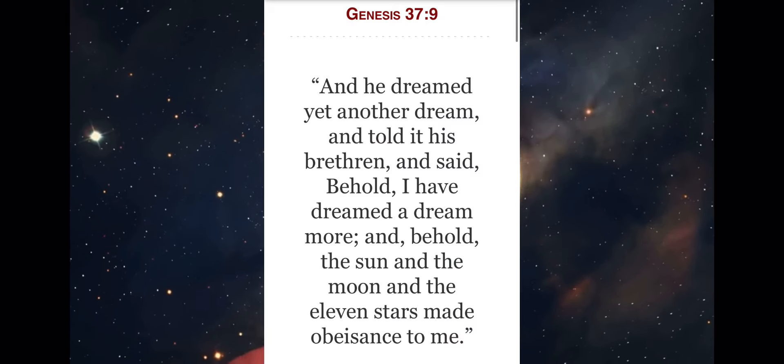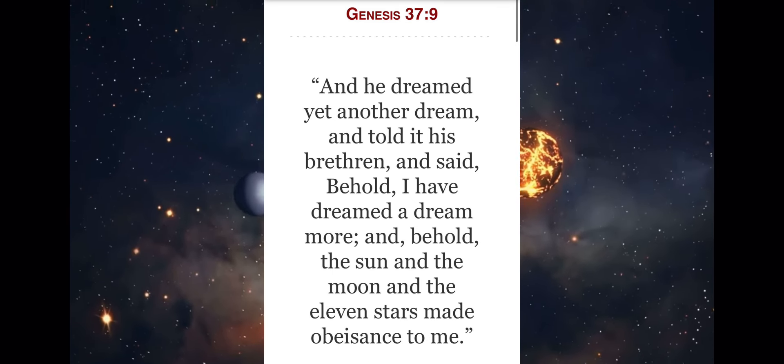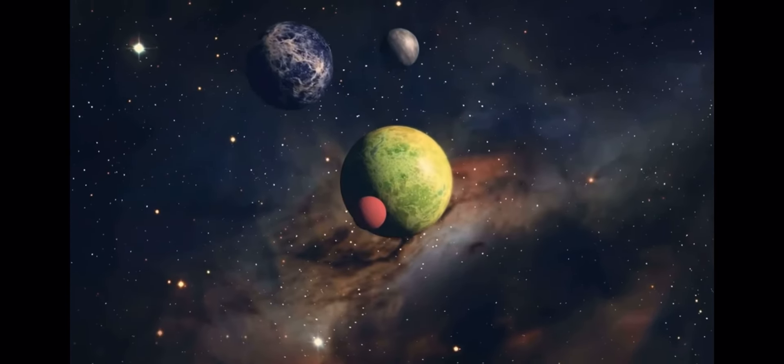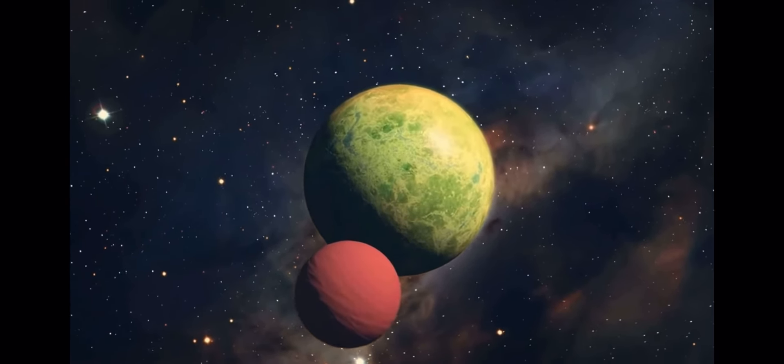Joseph dreamed of the 11 stars and seeing the sun and the moon in the book of Genesis. This was actually a revelation of the 12 tribes of Israel. But see how God used the stars, sun, and moon to reveal this to Joseph.